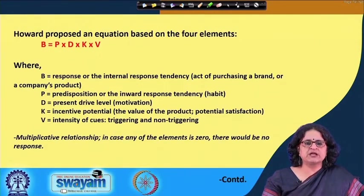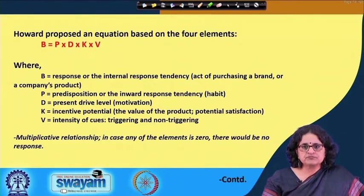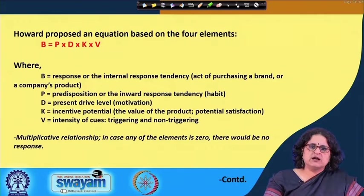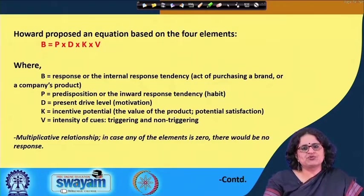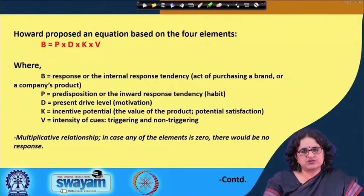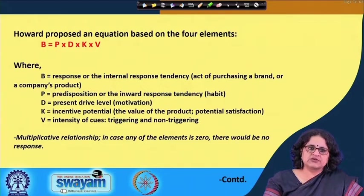Howard proposed a multiplicative relationship, and in case any of the elements is zero, there would be no response from the buyer or prospective buyer. For a particular response to occur, it is important that the predisposition matches the level of motivation, which aligns with the incentive potential or the value of the product in terms of potential satisfaction, multiplied by the strength of the cues the customer receives.